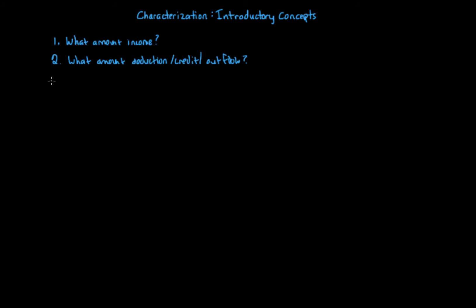The third question deals further with the first two: When? When do you have income, or when do you have a deduction, credit, or outflow? This is the timing question. Timing is very important in tax. Time value of money — a dollar of tax savings today is worth more than a dollar in the future. In general, a taxpayer likes to defer income recognition and accelerate loss or deduction recognition. Timing ends up being one of the biggest components in all of tax.